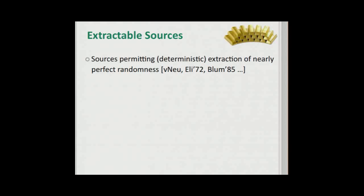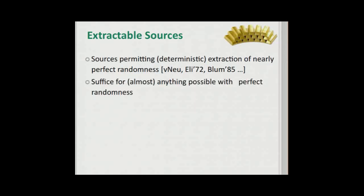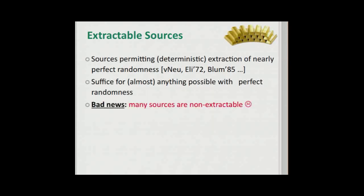This is easy to answer if we have extractable sources. These are sources that allow the deterministic extraction of perfect randomness. And so if we have extractable sources, it's easy to pretty much do anything that we could do with perfect randomness. The bad news, however, is that a lot of sources are not extractable.